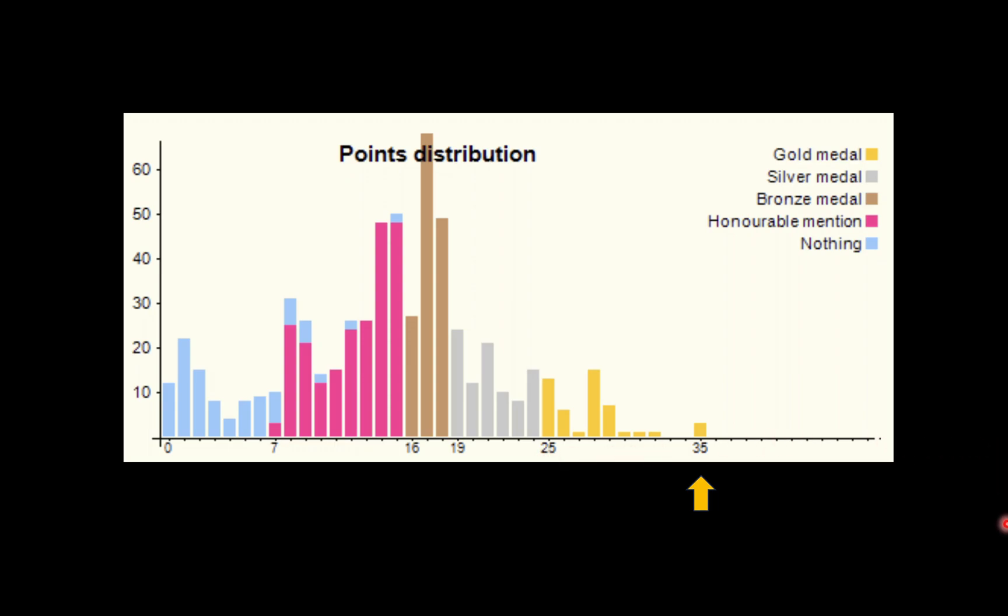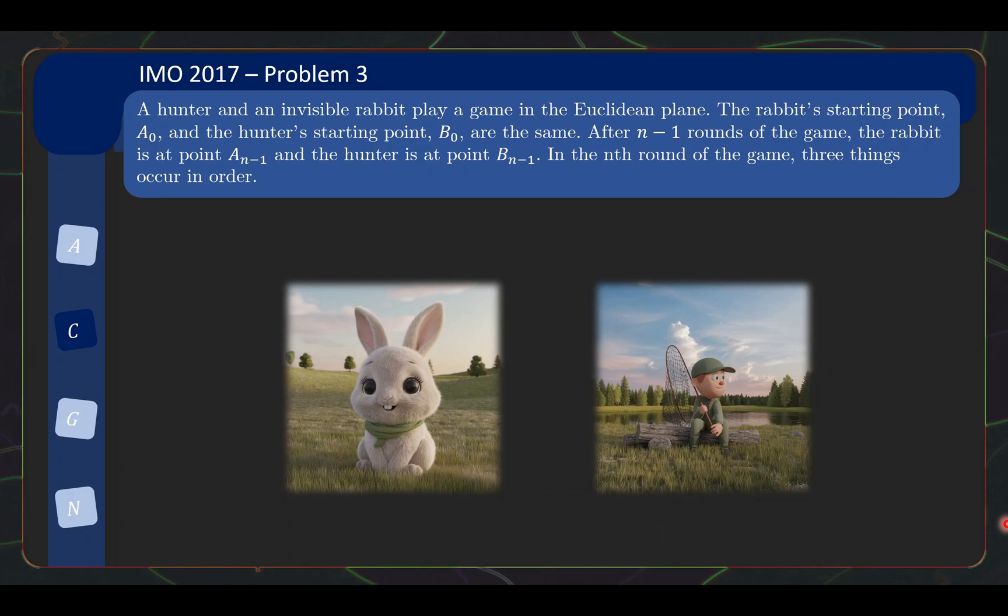Now what is this problem that I'm talking about? Well, it is the famous hunter and rabbit problem, which is the IMO 2017 problem number 3. So today we'll be taking a look at this problem, and then after discussing the solution, I'll give my views on whether or not this is indeed one of the hardest IMO problems ever, and let us also take a look at what is the fate of the two contestants who solved this problem. Now without further ado, let us take a look at this combinatorics problem.